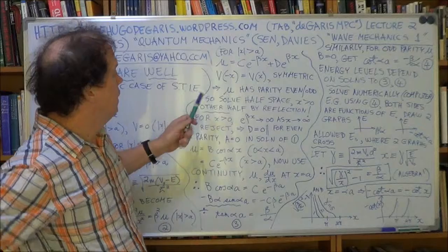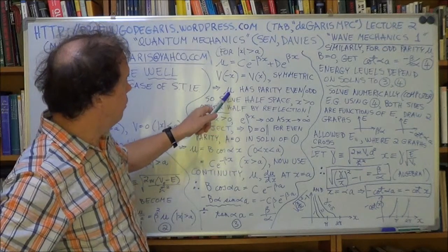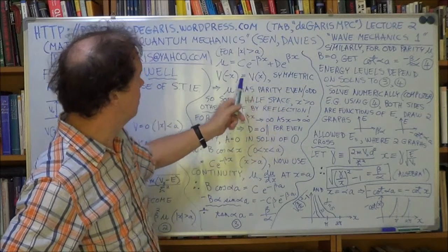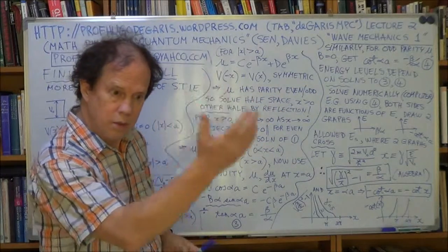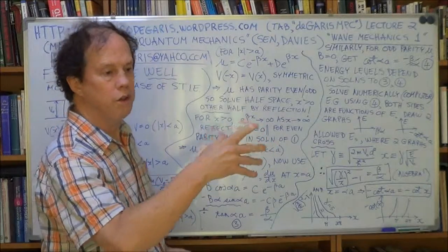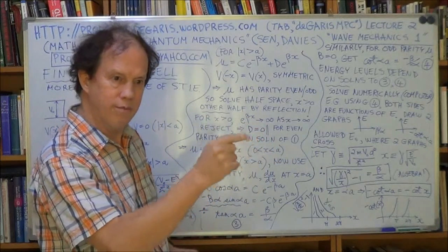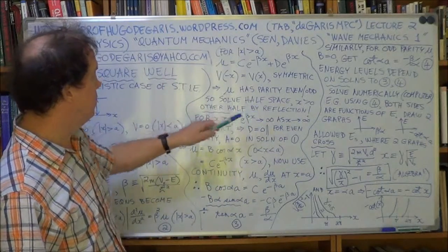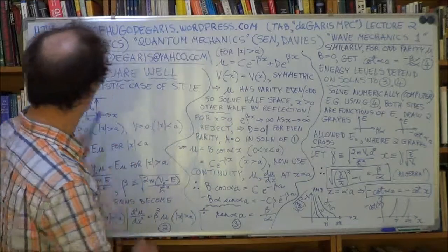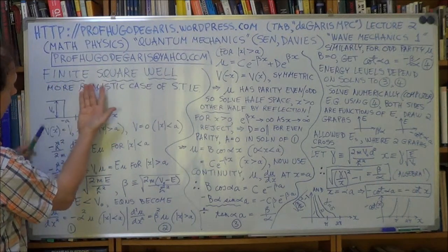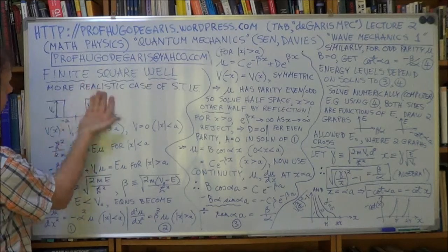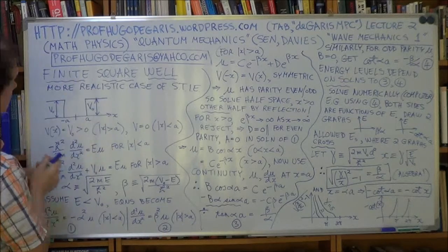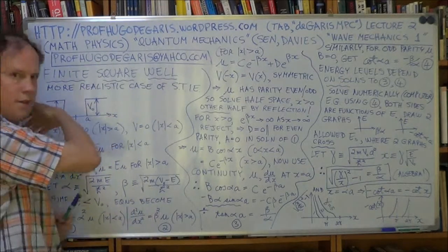So U will have odd or even parity. It will be U of minus x will equal either U of x or U of minus x will equal minus U of x. So we'll have odd or even parity. We can figure out what's happening to the left half once we know what's happening in the right half. It'll either be a mirror image, be the same, or whatever it is here, it'll become sort of minus on the left side.